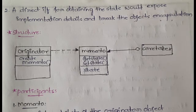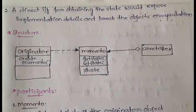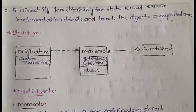When there is a risk that implementation details could be exposed externally, you can use the Memento pattern so that encapsulation is preserved, meaning your state, methods, and implementation details are not exposed. You can also preserve the state of the object. In those situations, you can use this pattern so that encapsulation will not be broken.